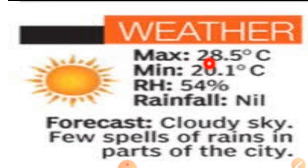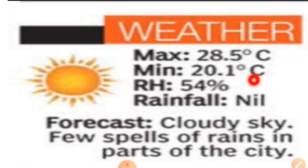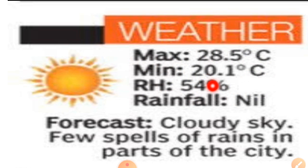For example, a weather report contains information such as: today's maximum temperature is 28.5 degrees Celsius and minimum temperature is 21.1 degrees Celsius. This is a sample of a weather news report from a newspaper. Today's rainfall is nil. Some newspapers also give the sunset and sunrise times, and moonset and moonrise times.